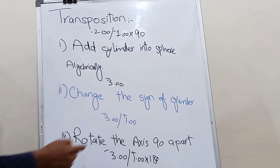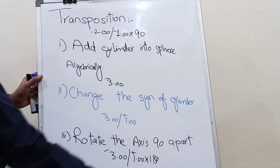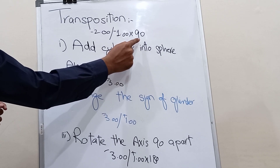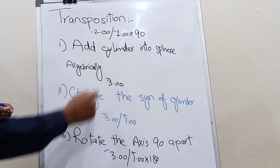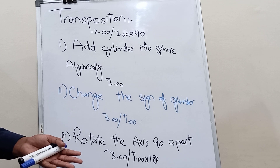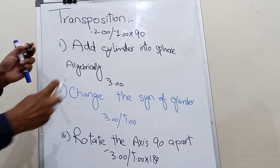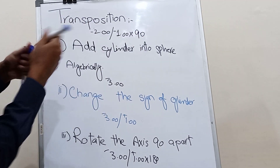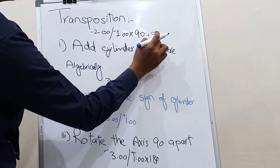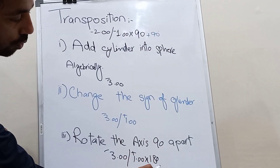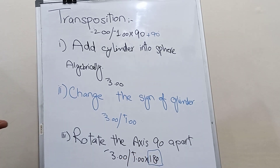The third step is to rotate the axis 90 degrees apart. As you can see, the axis of the cylinder is 90. We have to rotate 90 apart, so we add 90 to the axis: 90 plus 90 equals 180. So 180 would be our new axis.